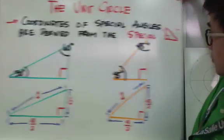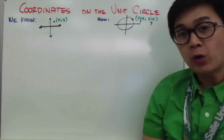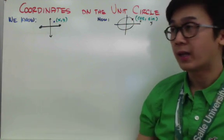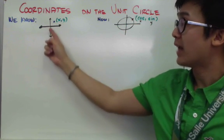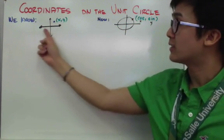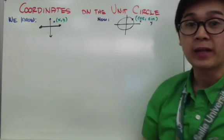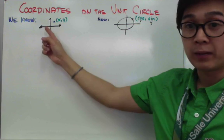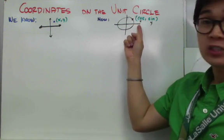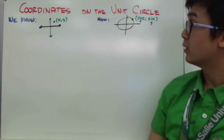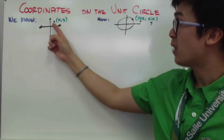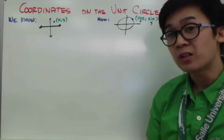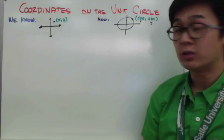Before we can identify the coordinates of the unit circle, you need to remember how the x-y plane works. The vertical axis is your y-axis and the horizontal axis is your x-axis. Since we're using a unit circle, the values of the coordinates will be different — we now use cosine as the value of x and sine as the value of y. So a point on the unit circle will be expressed in terms of cosine and sine.